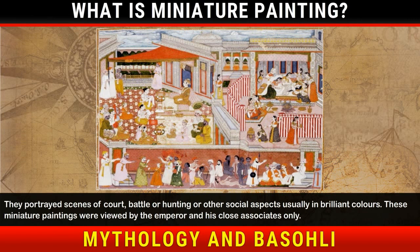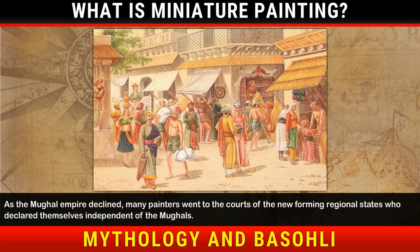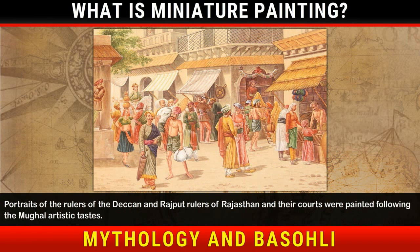As the Mughal empire declined, many painters went to the courts of the new forming regional states who declared themselves independent of the Mughals. Portraits of the rulers of the Deccan and Rajput rulers of Rajasthan and their courts were painted following the Mughal artistic tastes.